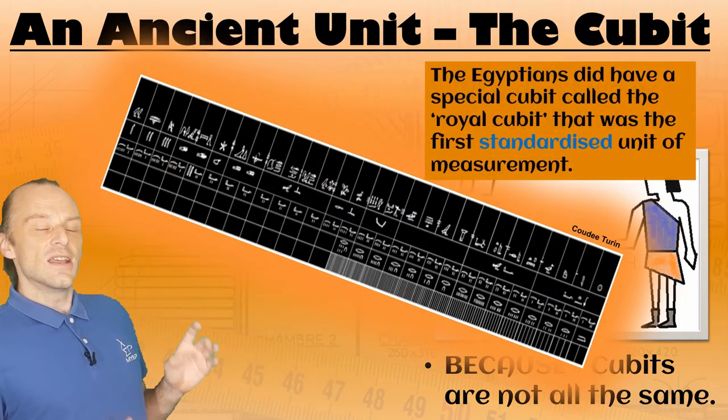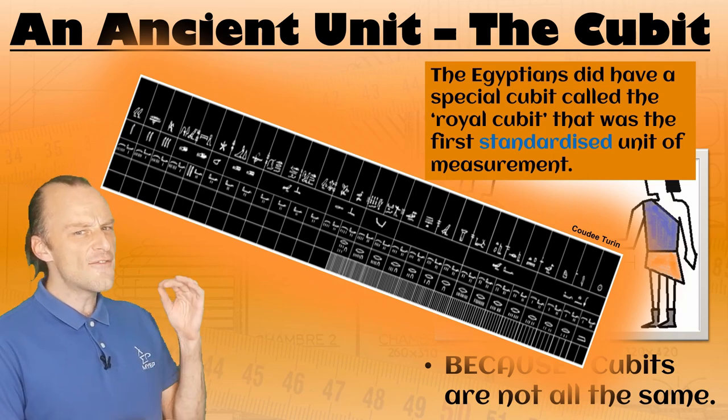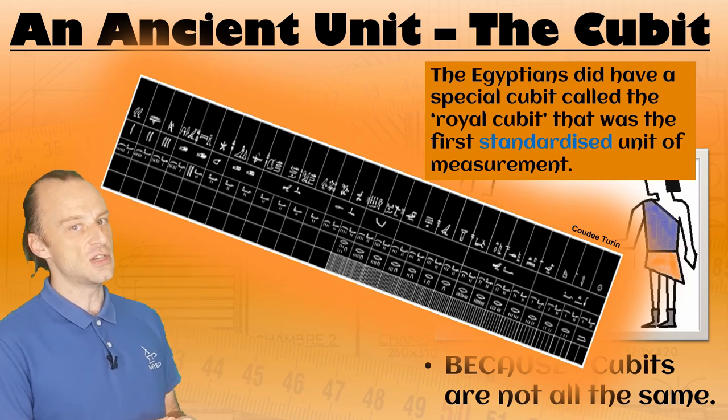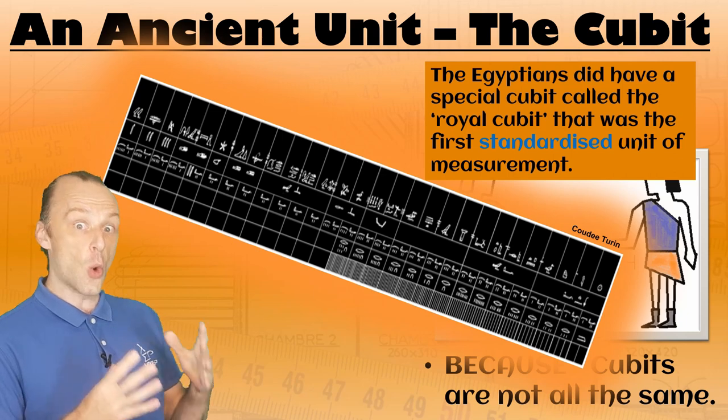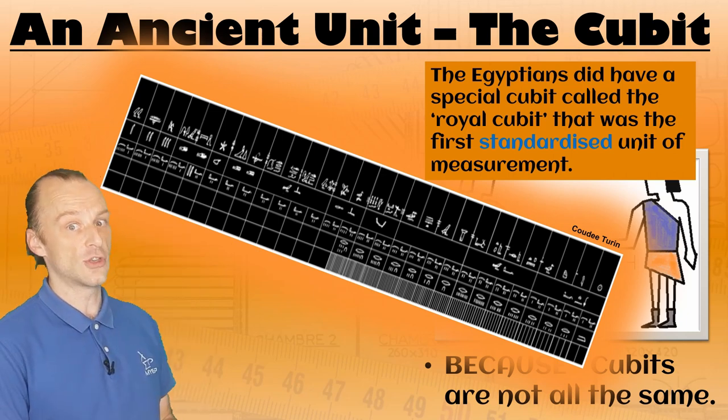Actually, the Egyptians did have a unit called the royal cubit, which was the very first standardized unit of measurement. But not all people in ancient Egypt had access to one of these royal cubit rods.